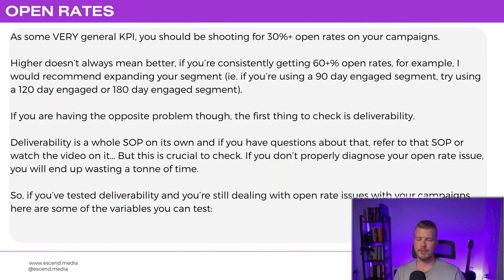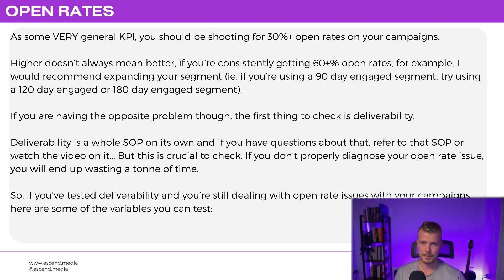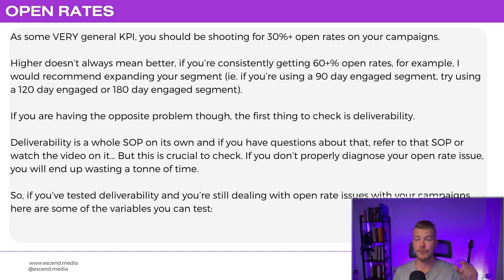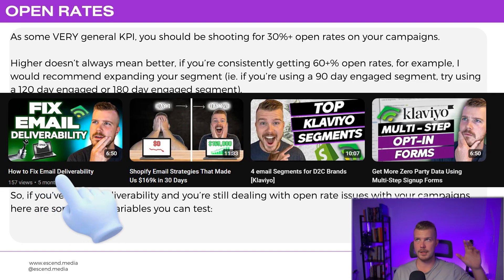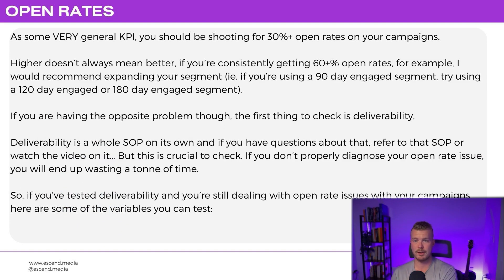For campaign open rates, you should be shooting for about 30% or more — ideally around 40%. Higher doesn't always mean better; if you're consistently getting 60%, consider expanding your segment from 90-day engaged to 120 or 180 days. If you're having the opposite problem, the first thing to check is deliverability — that's an absolute beast on its own. If you don't properly diagnose the open rate issue, you'll waste a ton of time fixing the wrong thing.